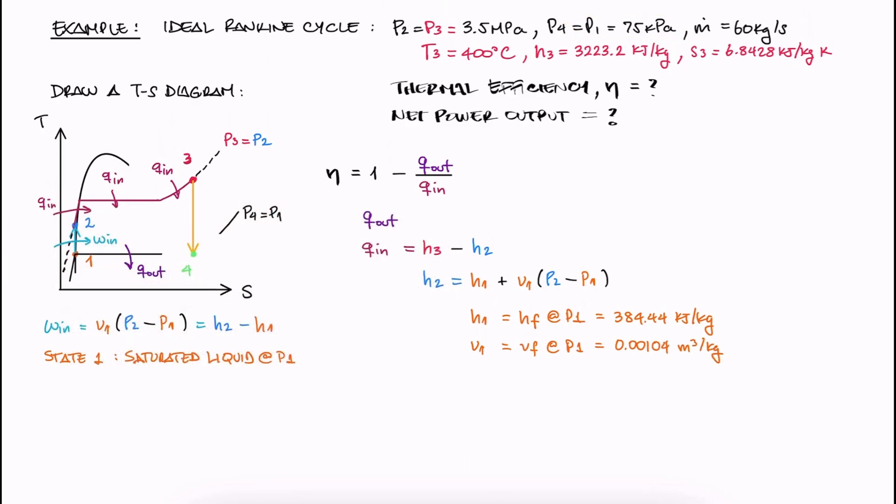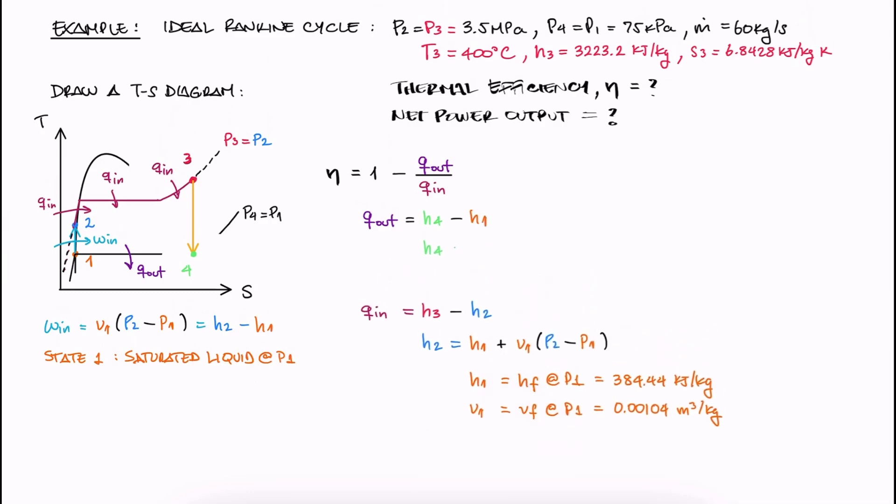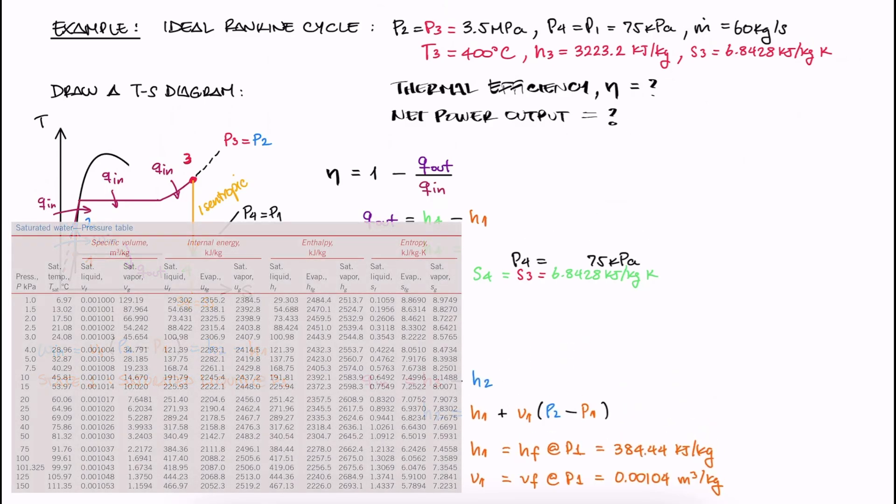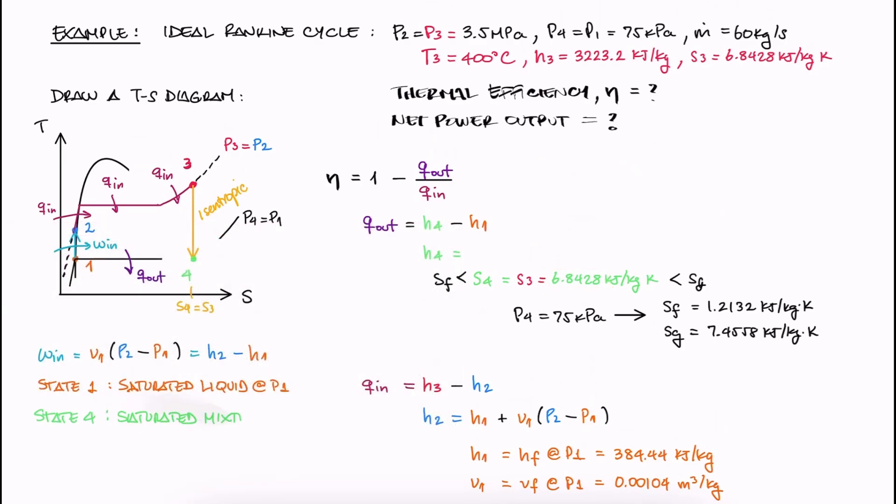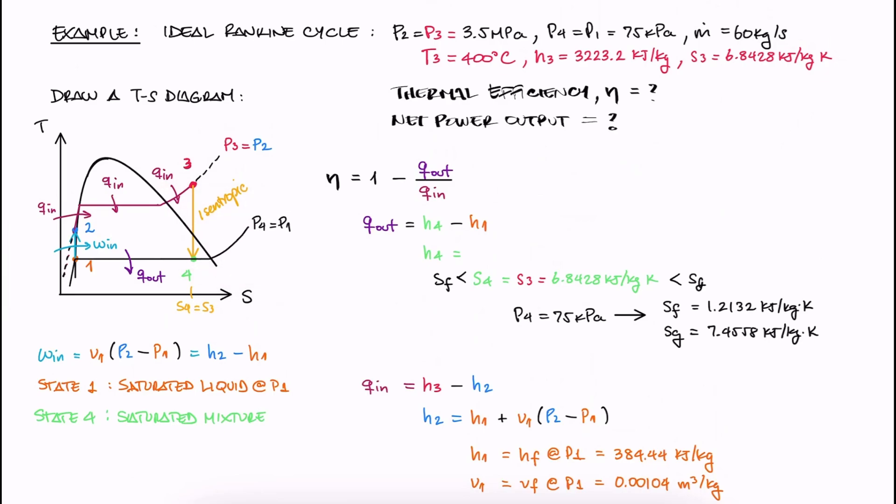Now to calculate Qout, we need the specific enthalpy difference between 4 and 1. So, all we're missing here is H4, since we just found H1. Since we have an isentropic process from 3 to 4, we can state that S4 is equal to S3. And since at P4, Sf is lower than S4 and Sg is greater than S4, it means that 4 is a saturated mixture. This means that we can now complete the TS diagram with the dome containing state 4.